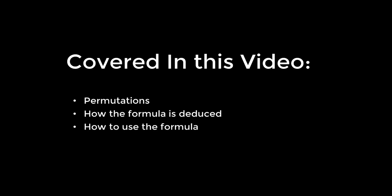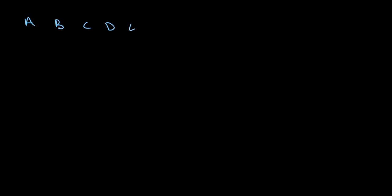In this video, I will be introducing you to the concept of permutations. If you remember my last video, I used the example of where we have five people, A, B, C, D, and E, and five seats, seat 1, 2, 3, 4, and 5, and we want to find out how many possible ways there are of arranging these different people in these seats.